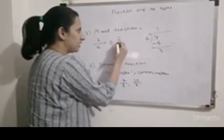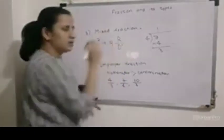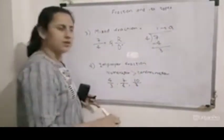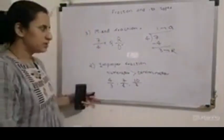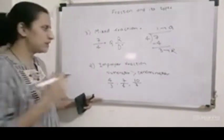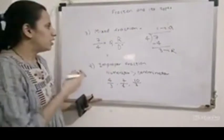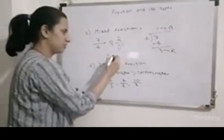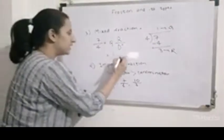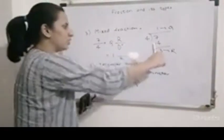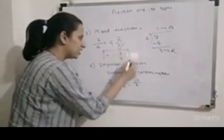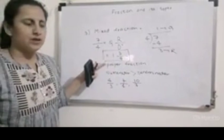The formula is: quotient, then remainder over denominator. Here the quotient is 1, the remainder is 3, and the denominator is always kept as 4. So 7 by 4 as a mixed fraction is written as 1 and 3 by 4. This type of fraction is called a mixed fraction. We have converted the improper fraction into a mixed fraction.